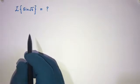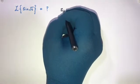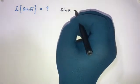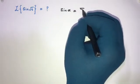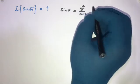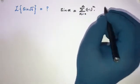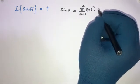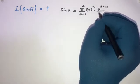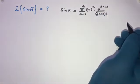First, we know the Taylor series of sine of x. We can write this as the infinite sum from zero to infinity of (-1)^n times x^(2n+1) over (2n+1) factorial.